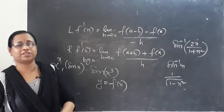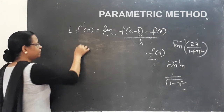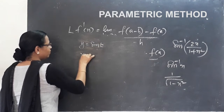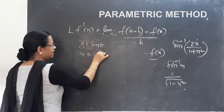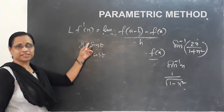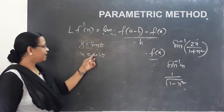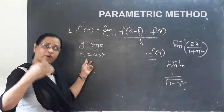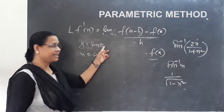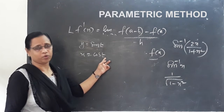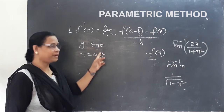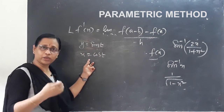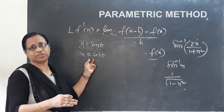The next is the parametric method. For example, y equals sin t and x equals cos t — these are two equations. Here x and y are expressed in terms of a third variable t, which is called a parameter. These are called parametric equations.